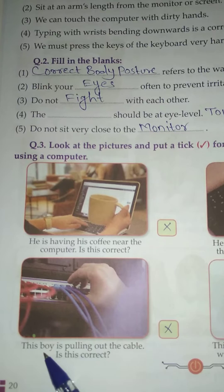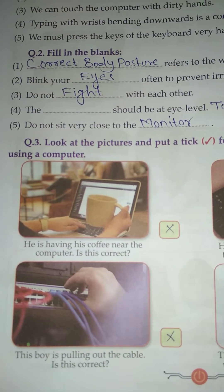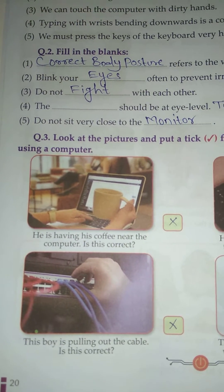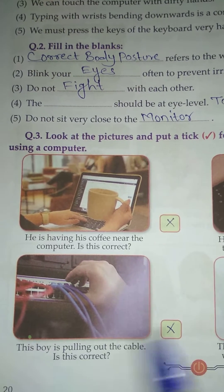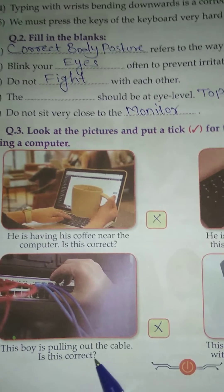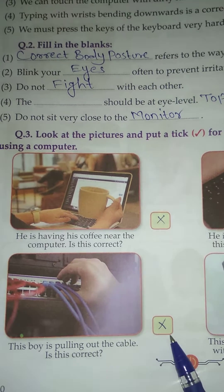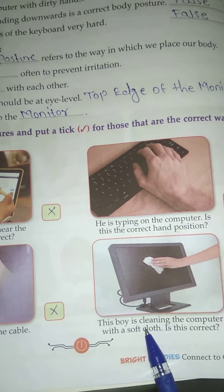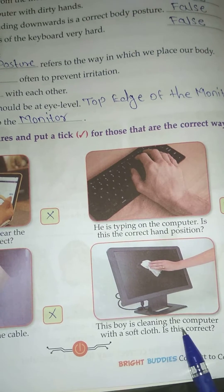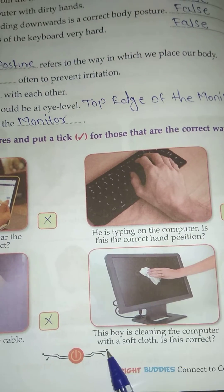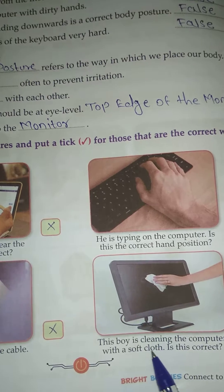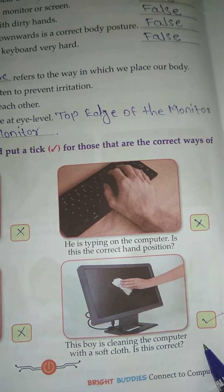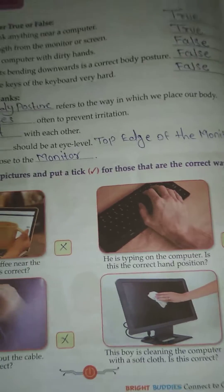Number 3: This boy is pulling out the cable — is this correct? Wrong. Number 4: This boy is cleaning the computer with a soft cloth — is this correct? Right.